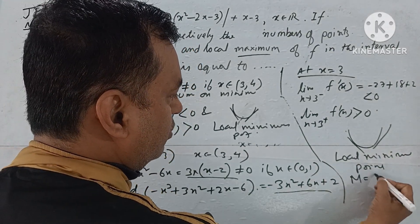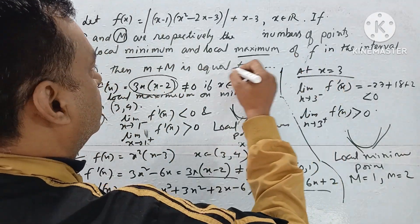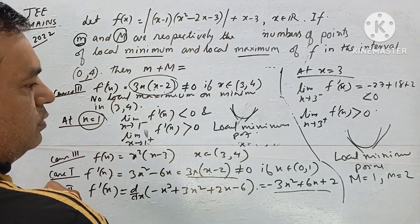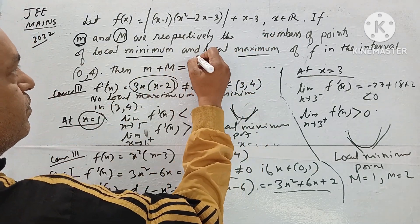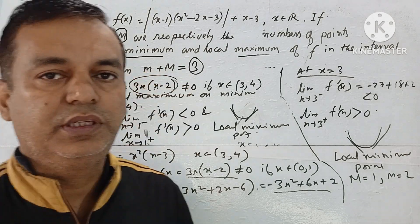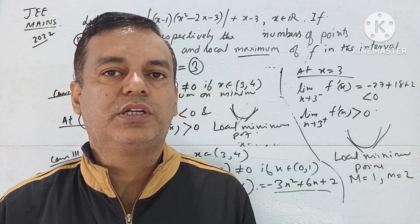Capital M has value 1, small m has value 2, therefore M + m equals 3. So the required value of small m plus capital M is 3. With this we end this video. Please like, share and subscribe the channel. Thank you very much.